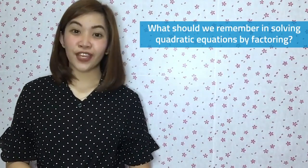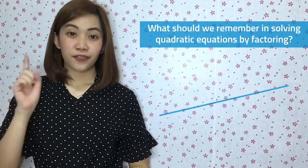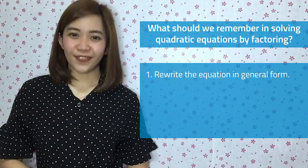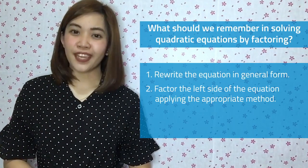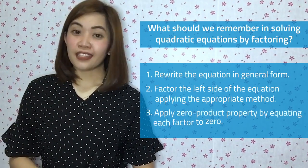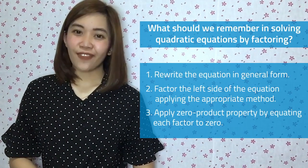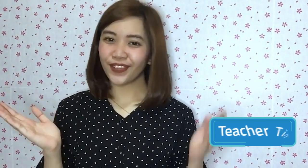Here are the steps in solving quadratic equations by factoring. First, rewrite the equation in general form. Second, factor the left side of the equation, applying the appropriate method. Third, apply the zero product property, equating each factor to 0. You did great! I hope you learned a lot about factoring quadratic equations today. If you did, click thumbs up and share this video to help students count, solve, and enjoy math. Don't forget to click the subscribe button. Again, this is Teacher Tin, and see you on our next numberful Wednesday!